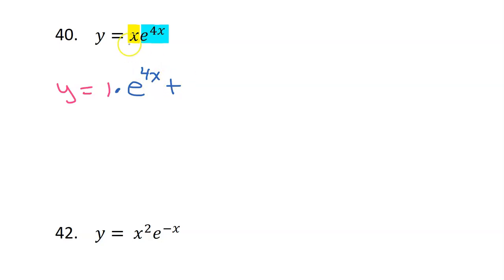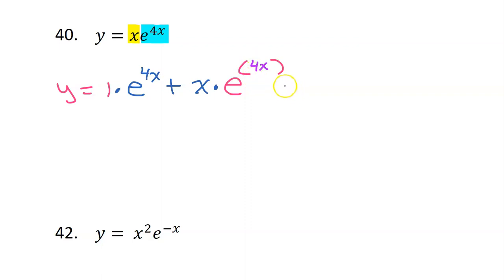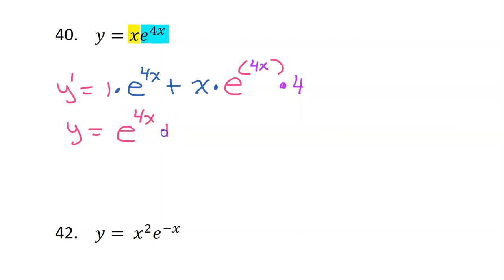And then we do a plus. The second time through, we leave the first function alone and we take the derivative of the second function. But the derivative of e to the something is still e to the something. The only thing you have to worry about is the chain rule, and because we do have this 4x on the inside, we have to multiply by the derivative of that, so we have to multiply by 4.